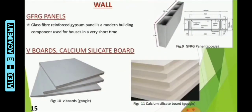Next is wall. A wall is a structure and surface that defines an area to provide security, shelter, or sound-proofing. Brick stones and hollow bricks are commonly used materials for wall construction. Through our project, we introduce some alternative materials for wall construction. The first one is the GFRG panel.